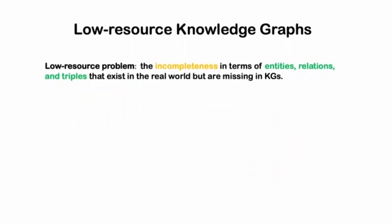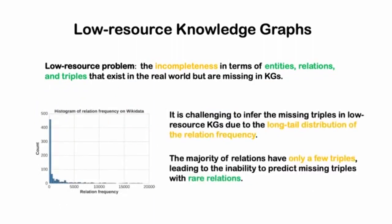It is challenging to infer the missing triples in low-resource knowledge graphs due to the long-tail distribution of the relation frequency. Such a data scarcity issue leads to the inability to predict missing triples with rare relations.